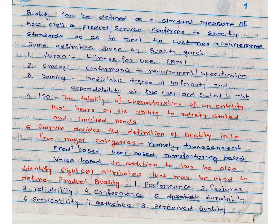In addition to this, Garvin also identifies the attributes that may be used to define product quality, like performance, features, reliability, conformance, durability, serviceability, aesthetics, and perceived quality. Performance means how well the product does the intended job.